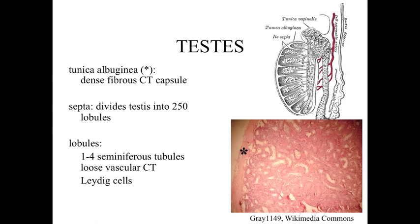Similar to the ovaries, there's going to be a dense connective tissue capsule around the outside of this organ. In both the testes and the ovaries, that dense connective tissue capsule is going to be referred to as the tunica albuginea. In contrast to the ovary, which had a distinct cortex with ovarian follicles and an intermediate medulla region, what we're going to see with the testes is essentially a series of walled-off lobules.